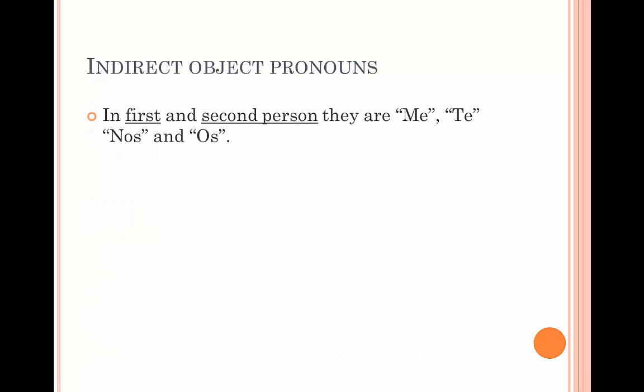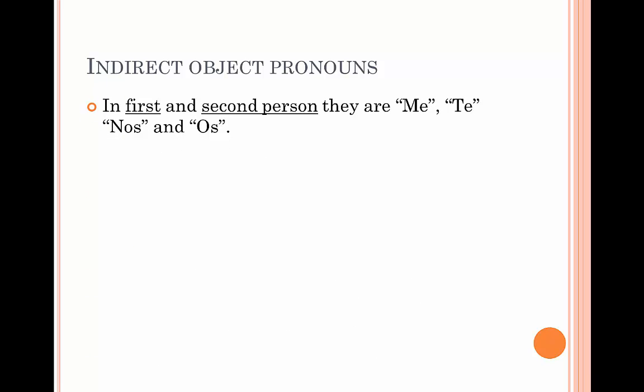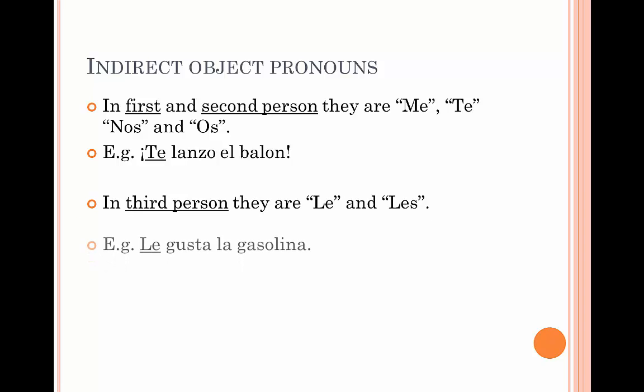Indirect object pronouns. Now that we've looked at direct object pronouns, we're going to look at indirect object pronouns. In the first and second person, they are me, te, nos, and os. For example, te lanzo el balón, meaning 'I'll throw you the ball.' In third person, they are le and les. For example, le gusta la gasolina.